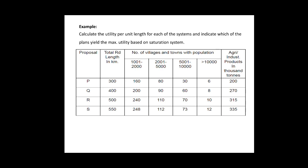Now we shall see an example for the selection of a proposal for a road network depending on the saturation system. Calculate the utility per unit length for each of the systems and indicate which of the plans yields the maximum utility based on the saturation system. From the table we have 4 proposals P, Q, R and S, which serve total road lengths of 300, 400, 500 and 550 km respectively.